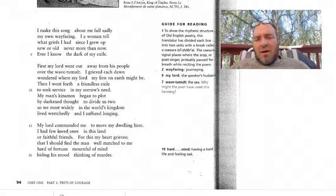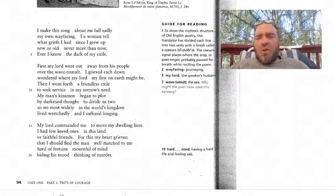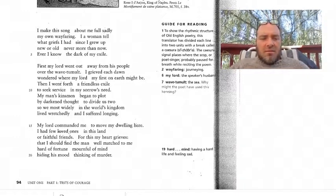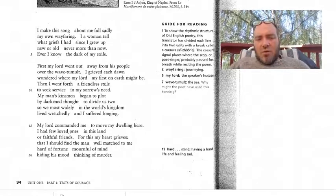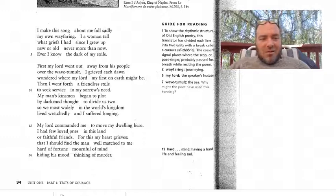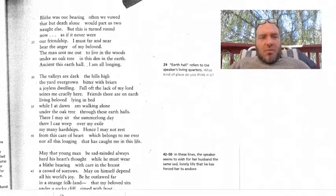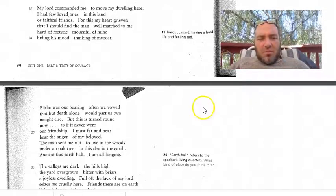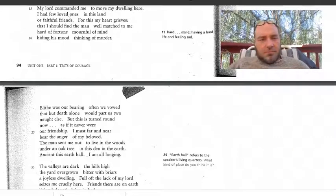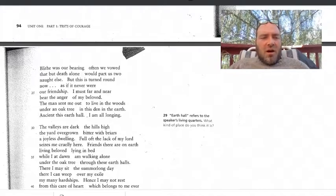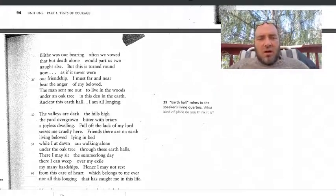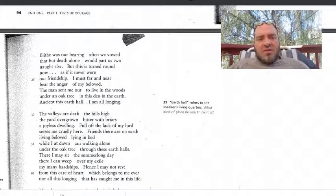My Lord commanded me to move my dwelling here. I had few loved ones in this land, or faithful friends. For this my heart grieves, that I should find the man, well-matched to me, hard of fortune, mournful of mind, hiding his mood, thinking of murder. That escalated quickly. Blythe was our bearing. Often we vowed that but death alone would part us two, not else. But this is turned round now, as if it never were our friendship. I must far and near bear the anger of my beloved.